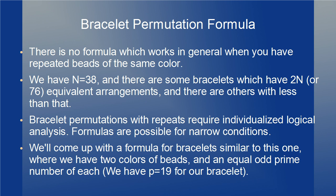We will derive a formula for bracelets like this. The formula will handle a special case where there are two colors of beads, an equal number of each color, and the number of each is an odd prime. On this bracelet, the number of beads of either color is 19, and 19 is an odd prime.